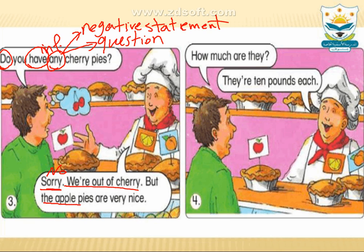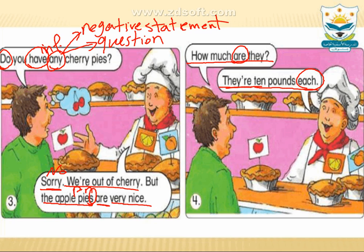'But the apple pies are very nice.' Next picture: 'How much are they?' — meaning the apple pies, how much do they cost? 'They're ten pounds each' — for each one it costs ten pounds. We use 'are' because we are talking about a plural noun. We say 'how much are they?' and the answer starts with 'they are,' because it is a plural noun.